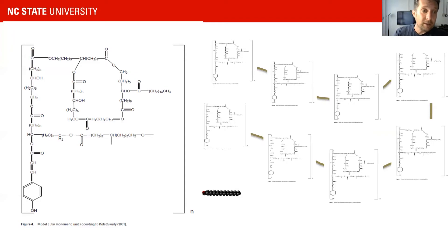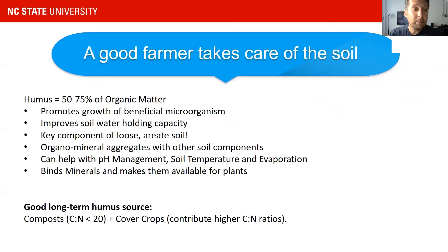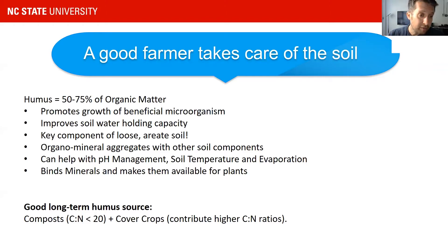Even with fumigation, humic substances can survive and continue to build up over the years. Humus has many other implications as well. It promotes growth of beneficial microorganisms and improves soil water holding capacity. It can aggregate with soil minerals — the non-organic part of soil — which holds a lot of nutrients. Humus particles themselves are also capable of holding nutrients and can serve as a pH buffer, influencing soil temperature and evaporation. Humus content is very important to build a healthy soil.